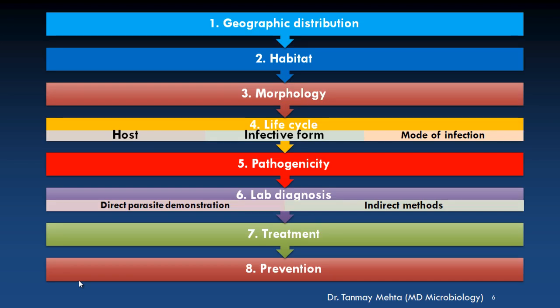Before moving further, there is a fixed scheme under which we discuss any parasite. We will first see the geographical region where this parasite is common, then its habitat in the human body, then the different morphological forms, then its life cycle including hosts involved, the infective form, and the mode of infection. Then we discuss pathogenicity and clinical manifestations, followed by direct and indirect diagnostic methods, and finally prevention and treatment modalities.